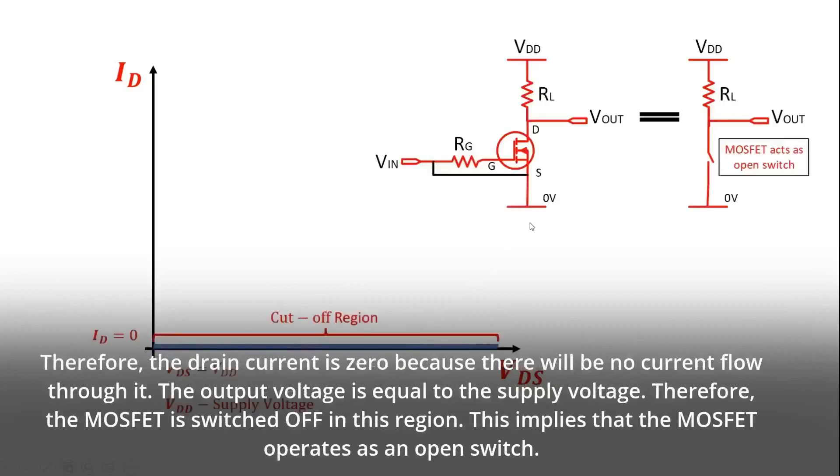The output voltage is equal to the supply voltage. Therefore, the MOSFET is switched OFF in this region. This implies that the MOSFET operates as an open switch.